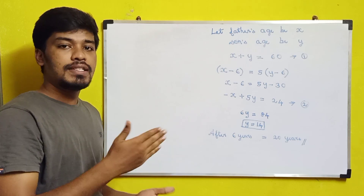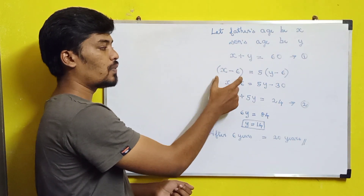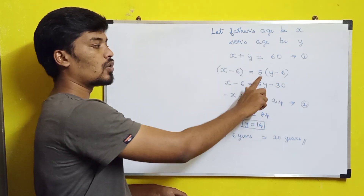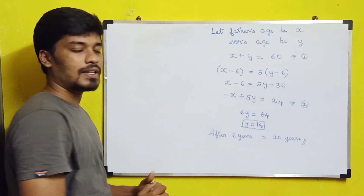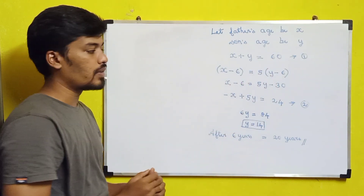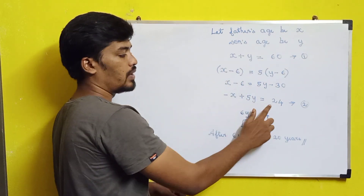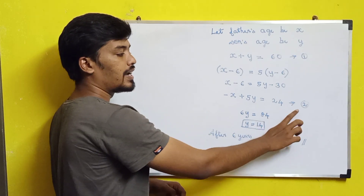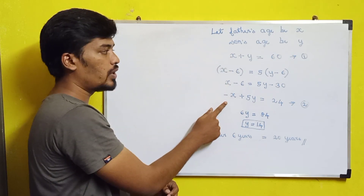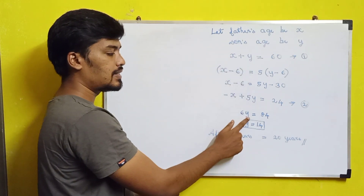The second condition says 6 years ago the father's age, which is x minus 6, was 5 times the son's age 6 years ago, which is 5 times (y minus 6). If you solve this equation you will get x minus 6 equals 5y minus 30, which simplifies to x minus 5y equals minus 24. We take this as the second equation. Solving by adding the first and second equations, x gets cancelled.